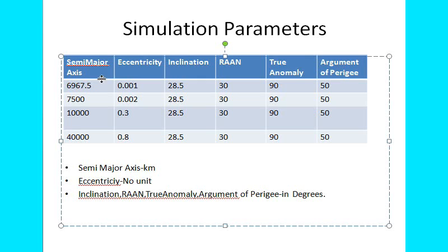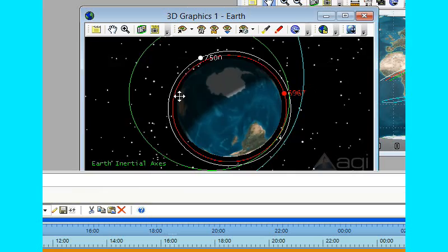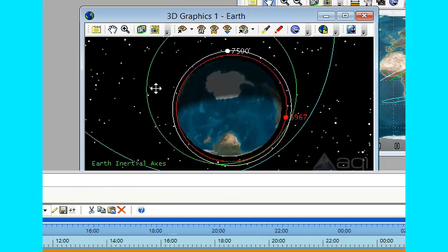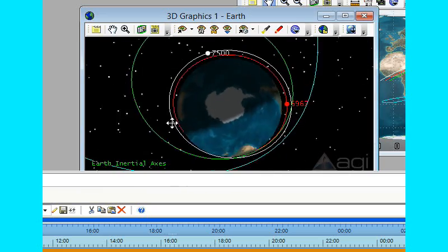Now if you see the orbit of 7,500 and 6,967.5 semi-major axis respective orbits, they are almost circular. White color is 7,500, it is almost circular. And 6,967.5 is almost circular because it has a very small value, almost 0, at 0.001 and 0.002.